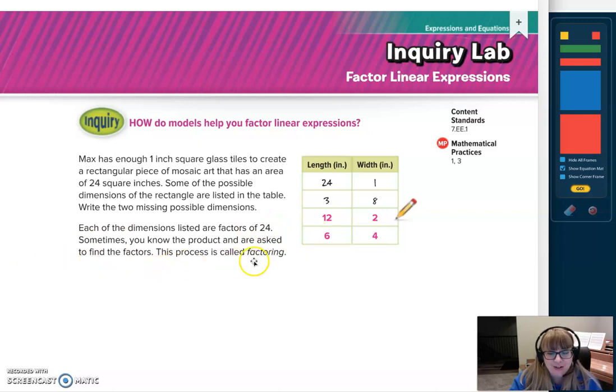That process is called factoring. We know the product. We know that when we multiply, it's going to be 24. We're trying to figure out what those numbers are that would multiply to give me 24, and that's called factoring. Let's move on.